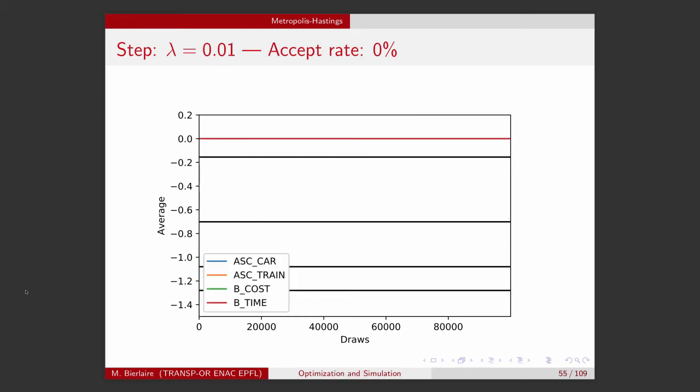And here I have something more interesting. So if I take a small lambda, what does it mean if I take a small lambda? I perform a step along the gradient, and then I perform a random walk, which basically stays in the same neighborhood as the point that I have obtained. I don't go very far.